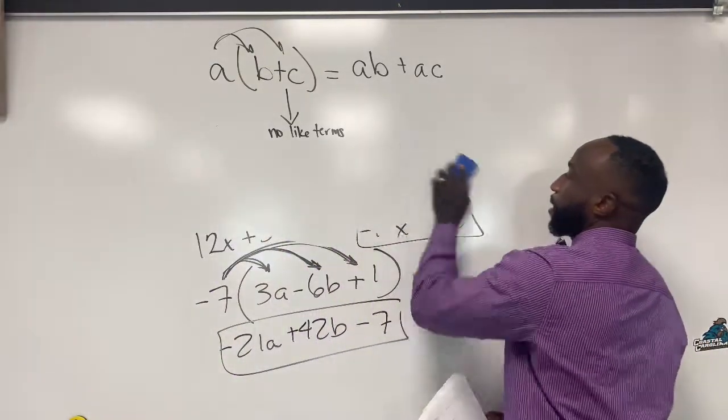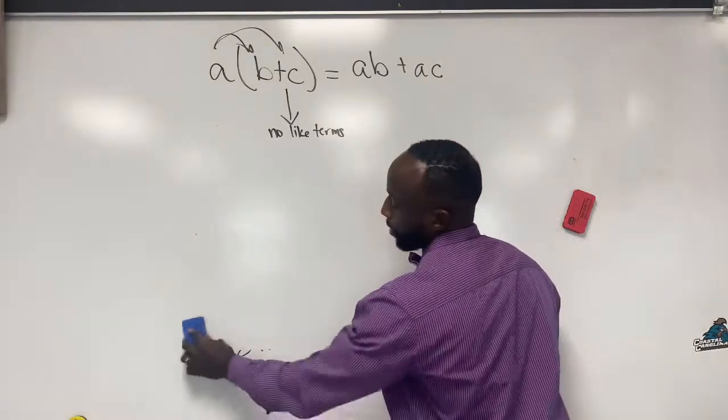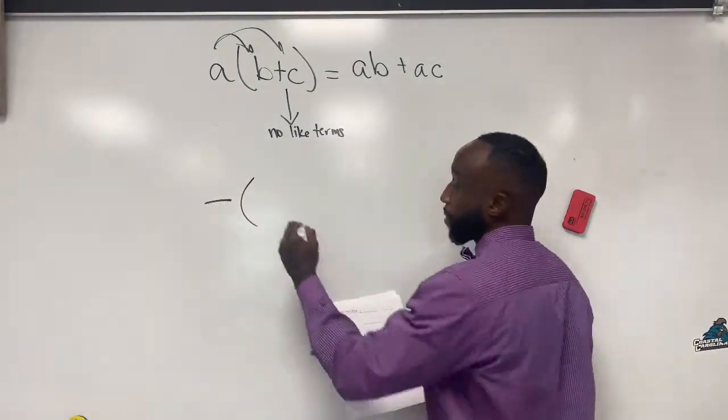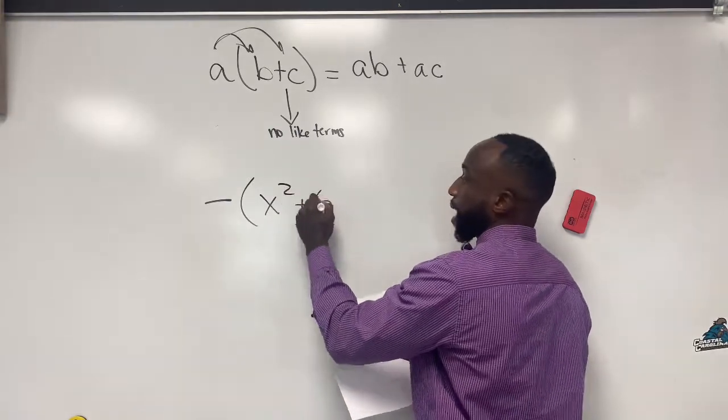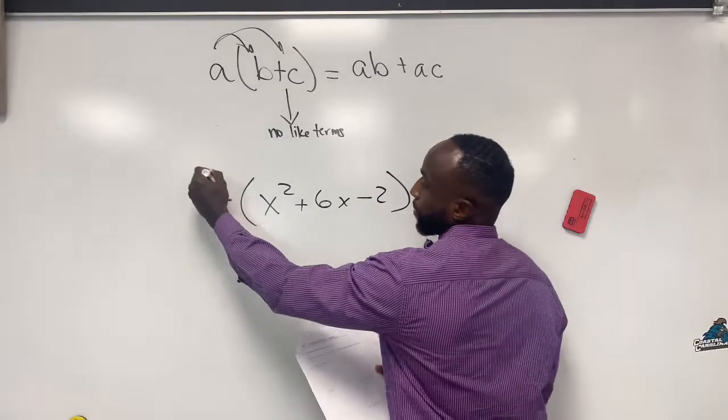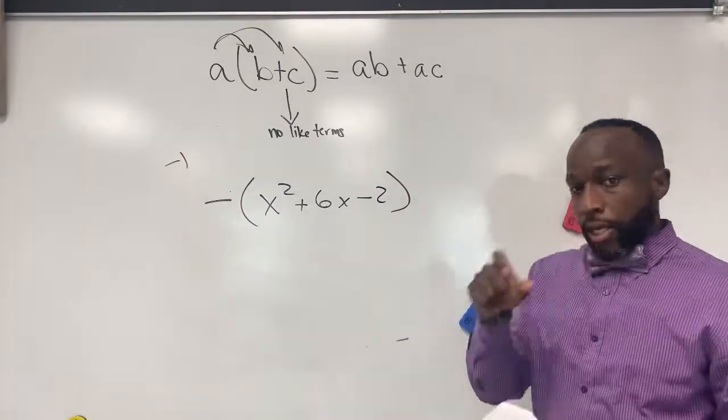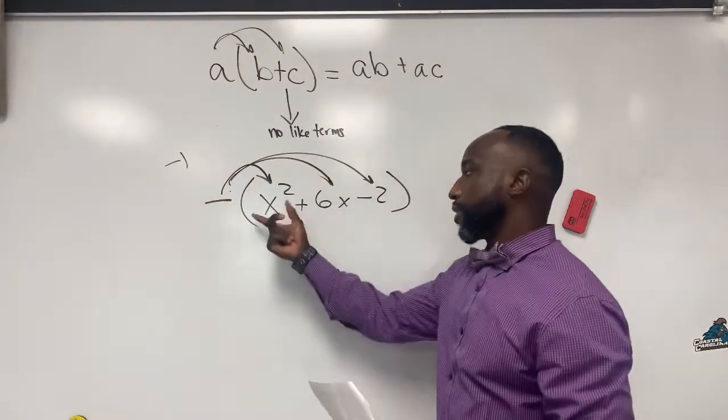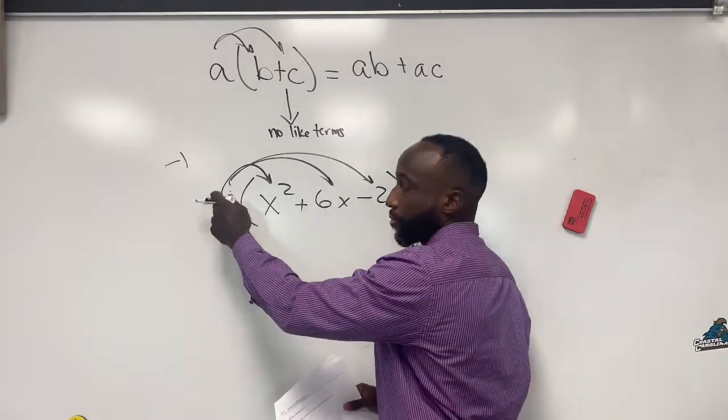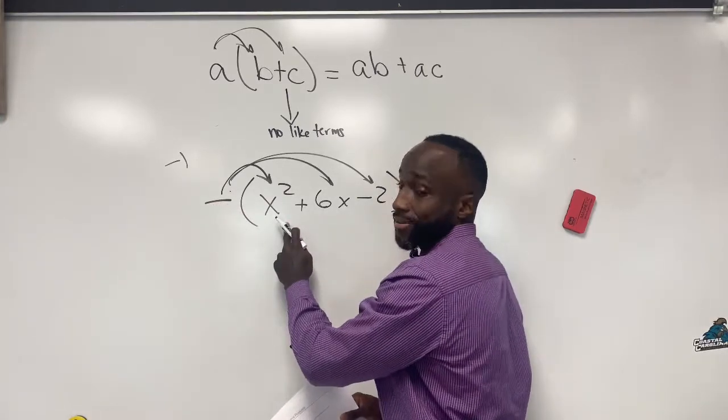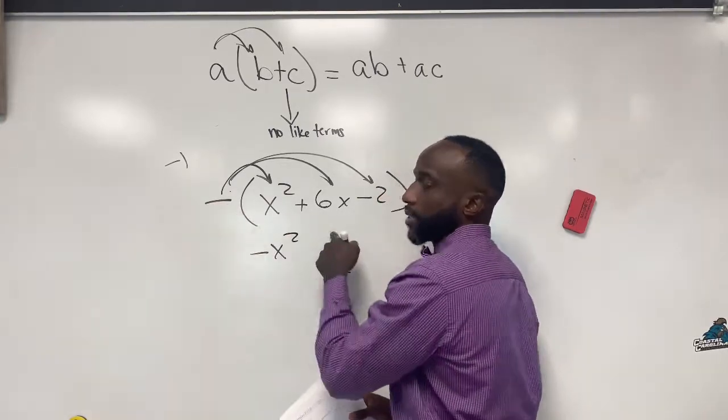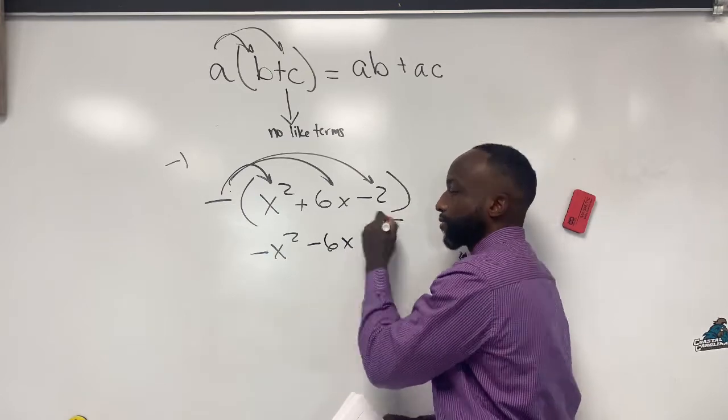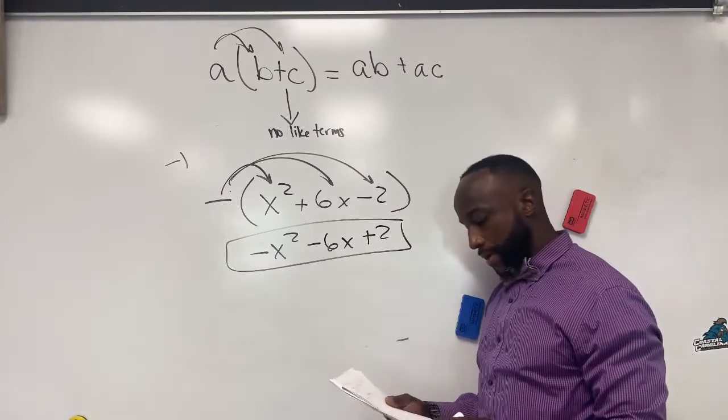When you have a minus sign outside of parentheses, what's actually going on is this minus sign represents negative one. So when you look at this minus sign on the outside of parentheses, no matter where it is in an equation, you're switching all the signs here because you're multiplying a negative into this number. So it'll be negative one times x squared, which is negative x squared, negative one times six x, which is negative six x, and negative one times negative two, which is positive two because a negative times a negative is a positive.